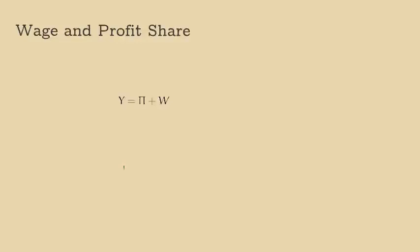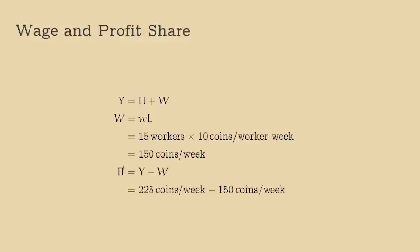Then, we can calculate the total value of wages by multiplying the number of workers by the wage rate. 15 workers, times 10 coins per week, gives 150 coins. We can find profits by subtracting the total wage bill from total income, which gives 75 coins per week.